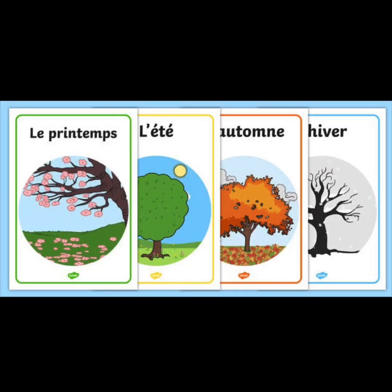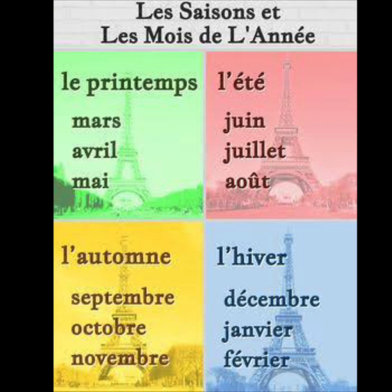These four seasons come in various months of the year. Let's now explore which month carries which season. Le printemps falls in the months of Mars, Avril, Mai. L'été falls in the months of Juin, Juillet, Août. L'automne falls in the months of Septembre, Octobre, Novembre. L'hiver falls in the months of Décembre, Janvier, Février.